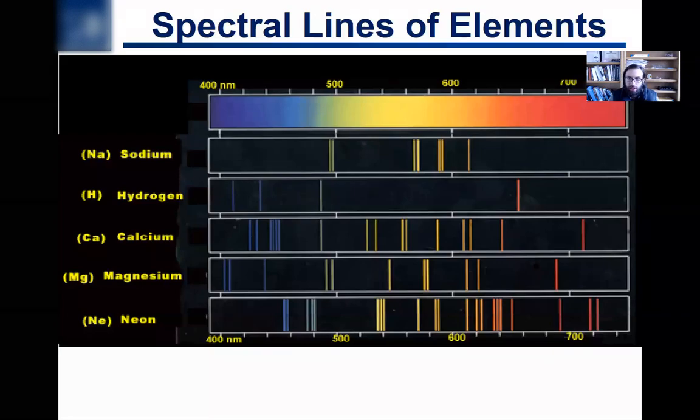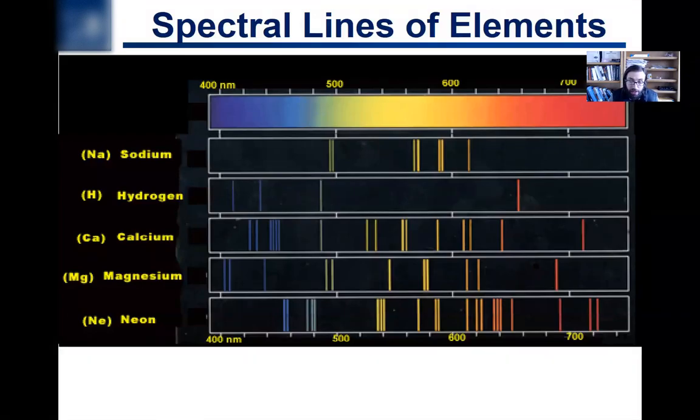We discussed the solar spectrum lines composed of many different elements. What you can do on Earth is take one element, heat it up, or put it in a gas discharge tube, and you'll see spectral lines of just that one element. These are like fingerprints for the element.